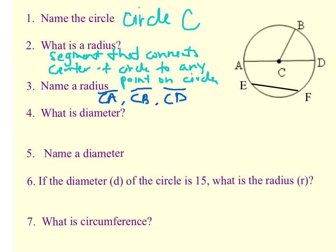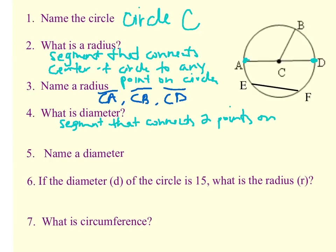Number four: what is a diameter? A diameter is related to a radius. Instead of connecting the center to a point on the circle, a diameter is the segment that connects one point on a circle to another point on the circle, but it has to go through the center. So the diameter is the segment that connects two points on a circle through the center. If we want to name a diameter from this picture, there's only one shown, and that is A to D. You can see it's going right through the center, so AD would be considered a diameter.